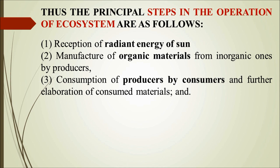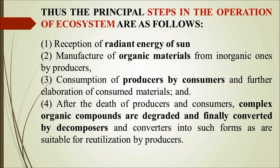After the death of consumers and producers, complex organic compounds are degraded. If you draw a graph, it rises up and then comes back down, showing this flow. Complex organic compounds are degraded and finally converted by decomposers — the detritivores, bacteria, fungi, earthworms, and nematodes — into forms suitable for re-utilization by the producers. These nutrients then go back to the producers, completing this cyclic stepwise process.